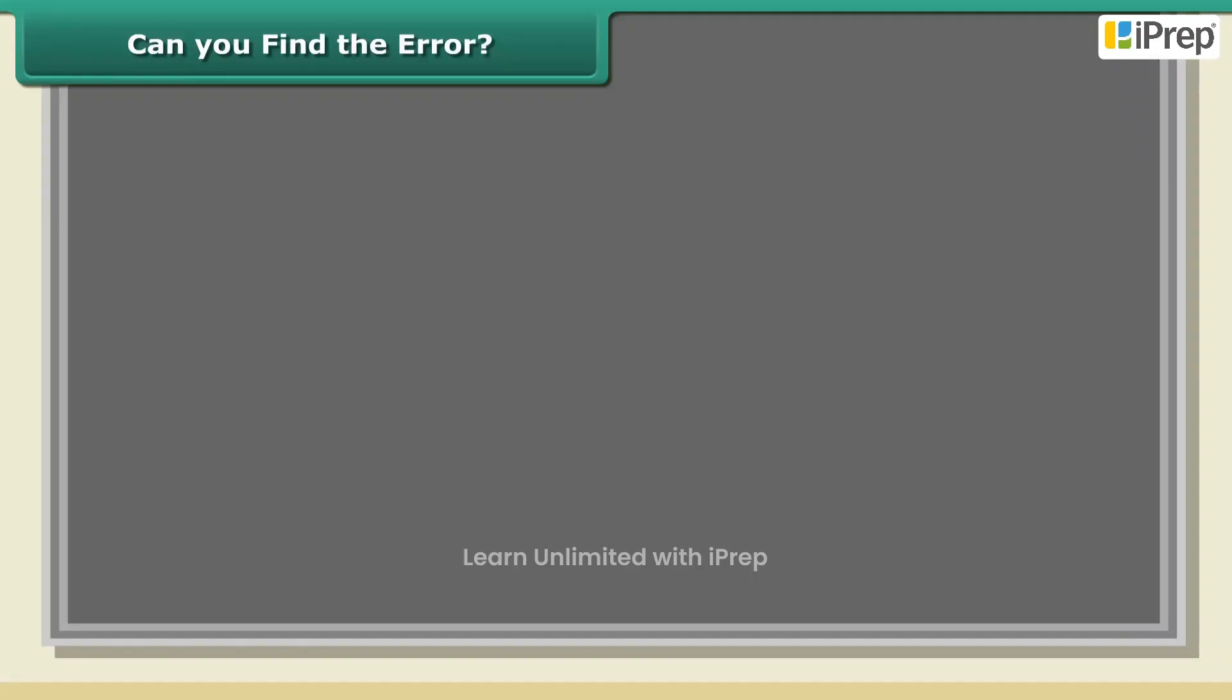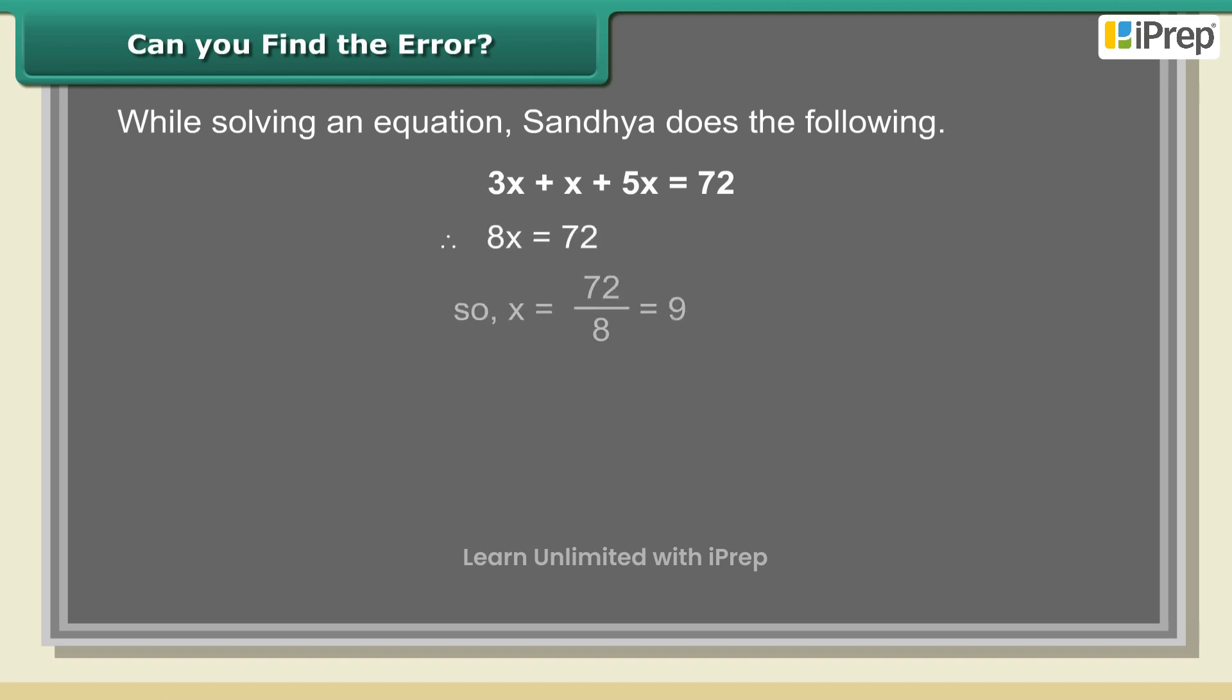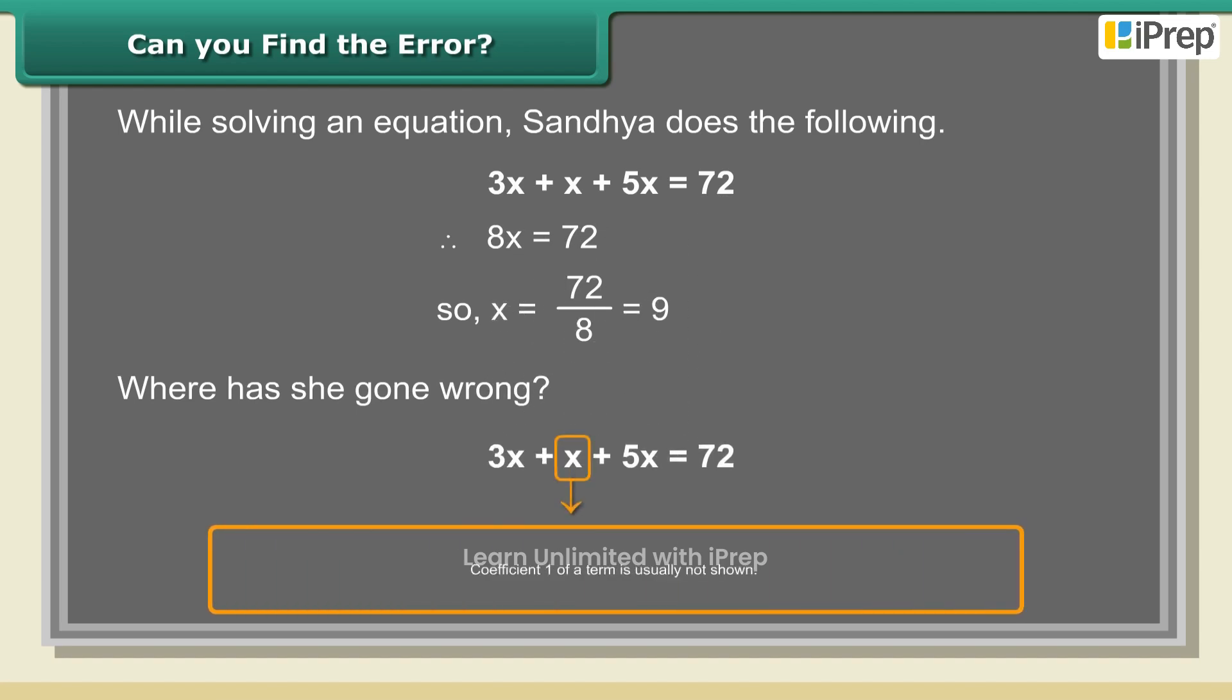Can you find the error? While solving an equation, Sandhya does the following: 3x + x + 5x = 72, therefore 8x = 72, and so x = 72 ÷ 8 = 9. Where has she gone wrong?